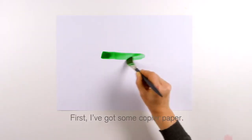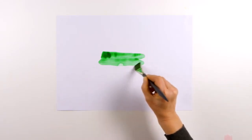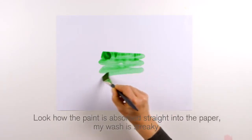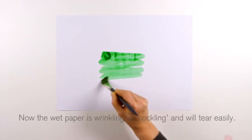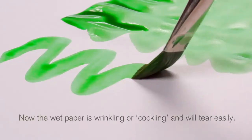First I've got some copier paper. Look how the paint is absorbed straight into the paper, my wash is streaky. Now the wet paper is wrinkling or cockling and will tear easily.